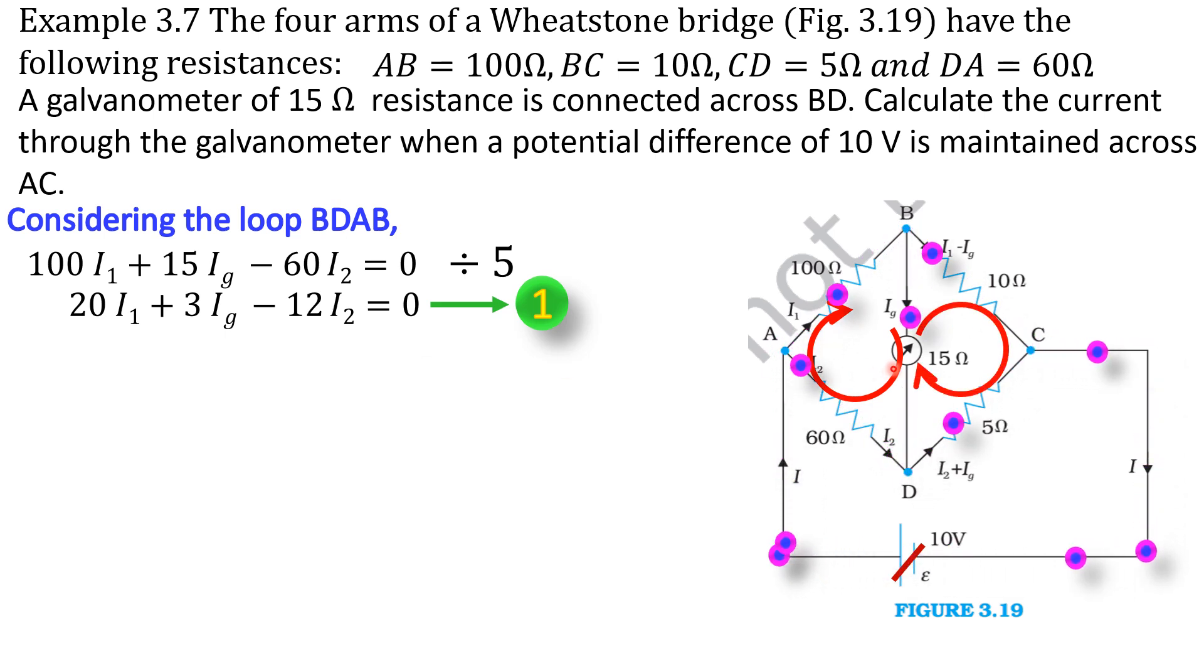Next we consider this loop, that is BCDB loop. Here this loop direction and the current directions are same. But in these two cases, this is loop direction, this is current direction. Here, this is loop direction, upward direction, but current direction is downward direction. Both are opposite direction. So we have to give negative sign here and here.